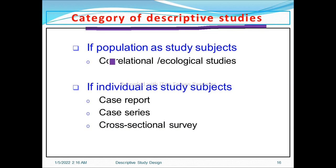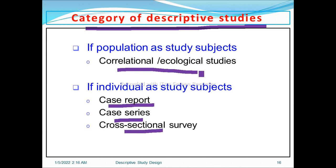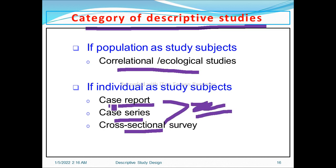Categories of descriptive studies: descriptive studies include case reports, case series, cross-sectional studies, and ecological studies — these four designs are categorized under descriptive studies. Case reports, case series, and cross-sectional studies are used when study subjects are at the individual level. If study subjects are at the population level, we use ecological or correlational study. The key difference is whether study subjects are at population level or individual level.